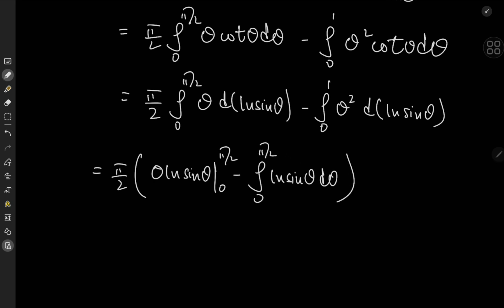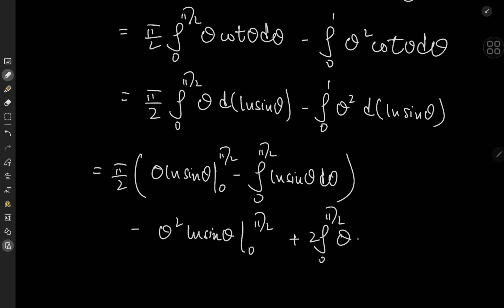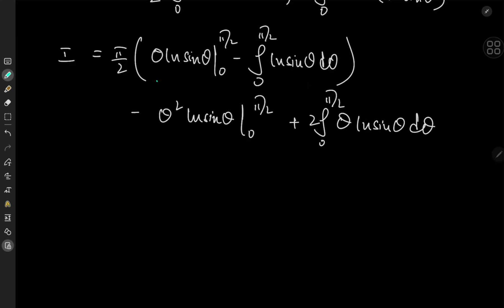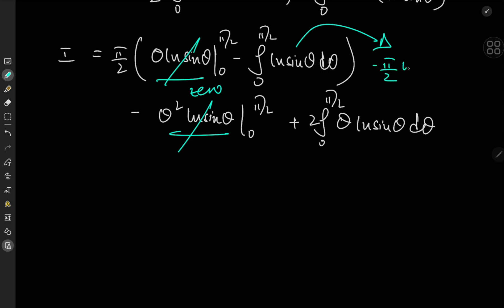Integrating by parts: we get boundary terms involving θ·log(sin θ) and θ²·log(sin θ) evaluated from 0 to π/2 — these both crash to 0 at both limits, so we cross them out. We're left with one of Euler's famous log-trig integrals, the integral from 0 to π/2 of log(sin θ) dθ, which evaluates to −π/2 · log 2.